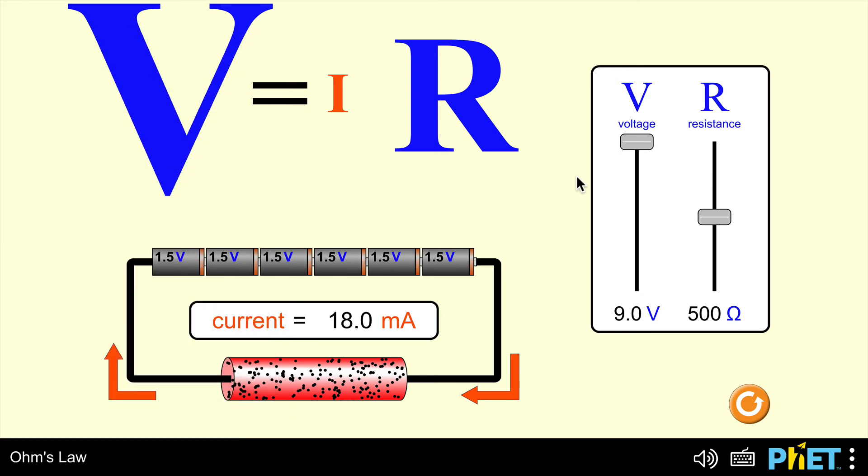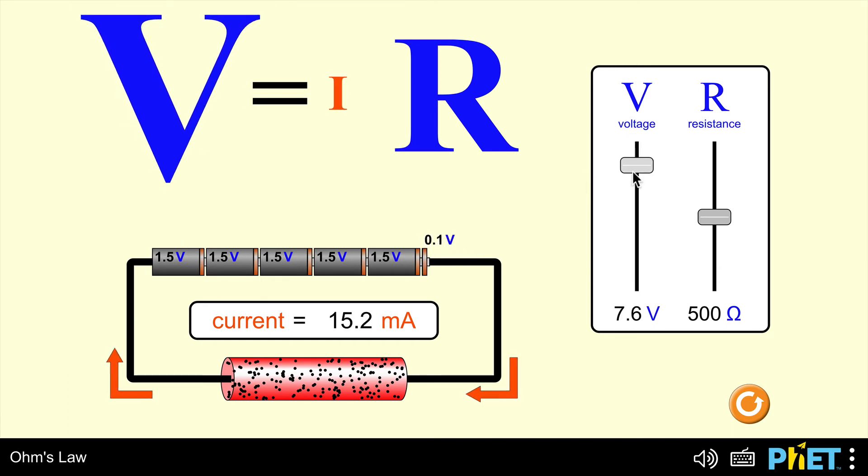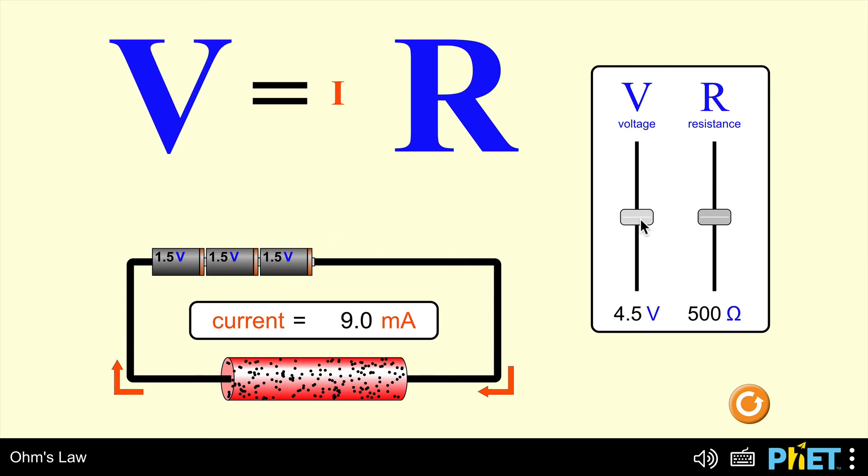If one of them say was to half, so if I was to take voltage to half its value to 4.5, it's gone from 18 milliamps to 9 milliamps. So halving the voltage halves the current. Doubling the voltage doubles the current. That means that the two of these are directly proportional.